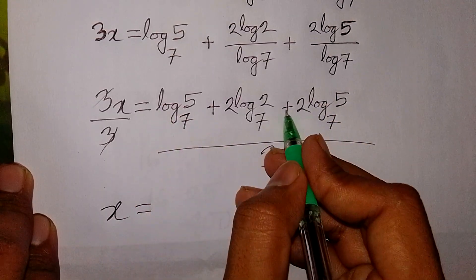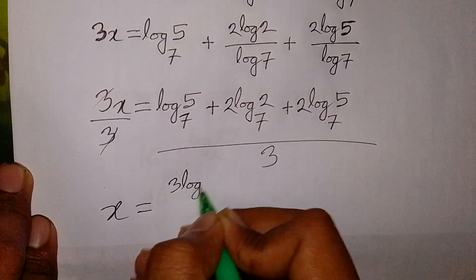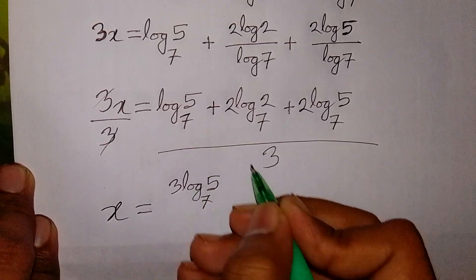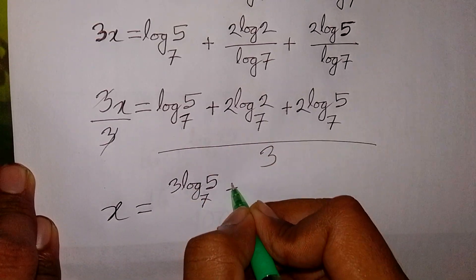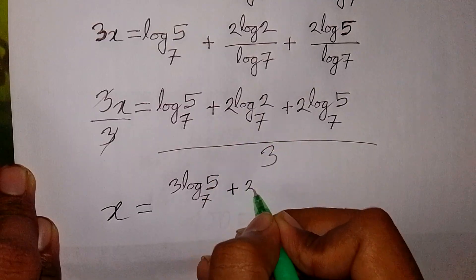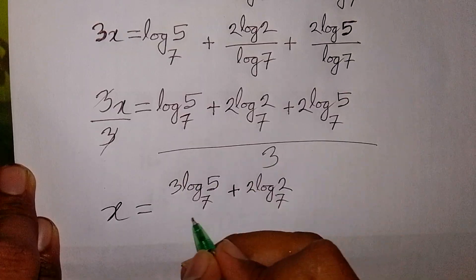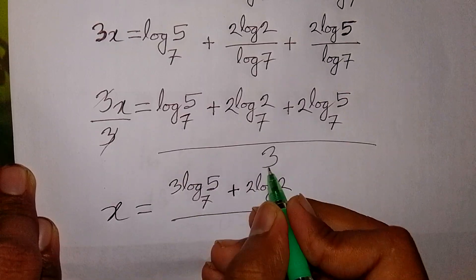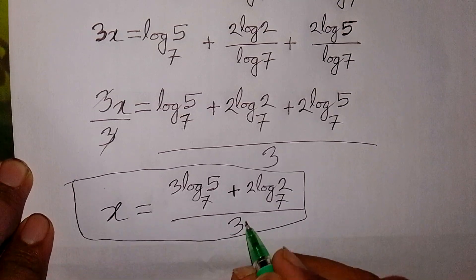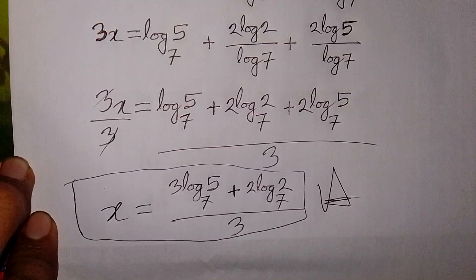So this 3 and this 3 will cancel. Here x is equal to log 5 base 7 plus 2·log 5 base 7 plus 2·log 2 base 7 all over 3, which gives 3·log 5 base 7 plus 2·log 2 base 7, over 3. This is the value of x — this is our final answer.